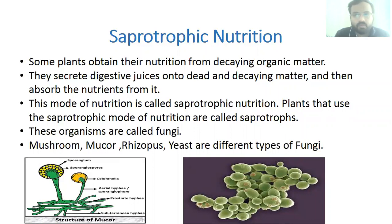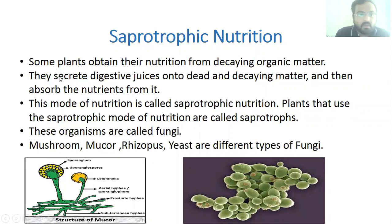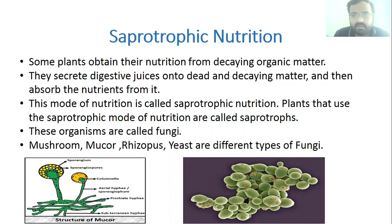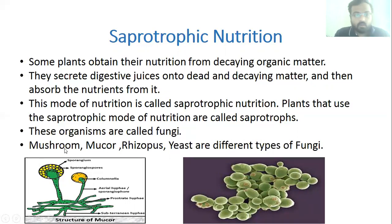Saprotrophs obtain their nutrition from decaying organic matter. They secrete digestive juices onto dead and decaying matter, digest it, and then absorb the nutrients from it. Examples of organisms that follow saprotrophic mode of nutrition include fungi such as mushroom, Mucor, Rhizopus, and yeast.